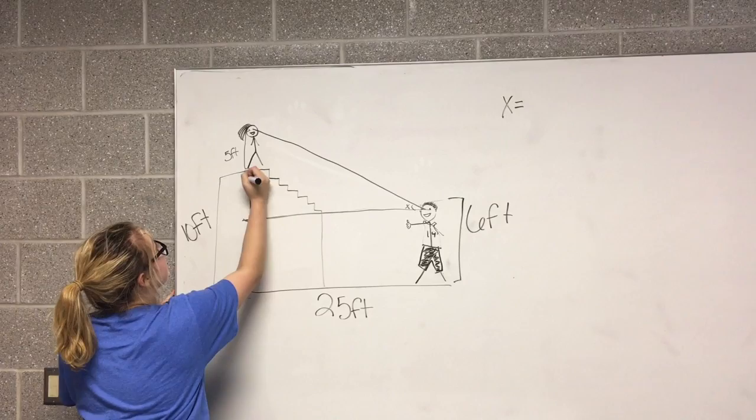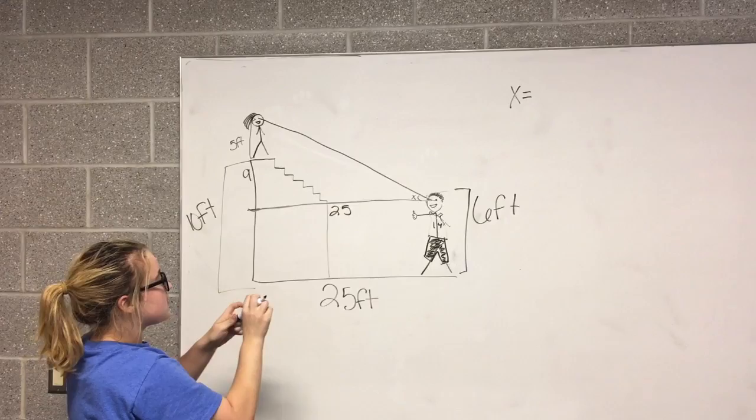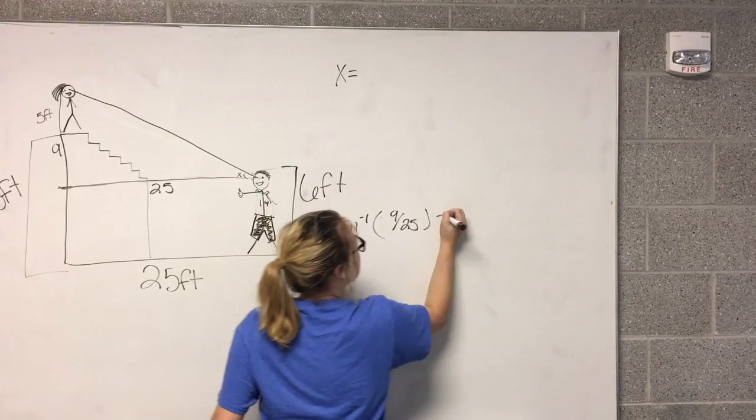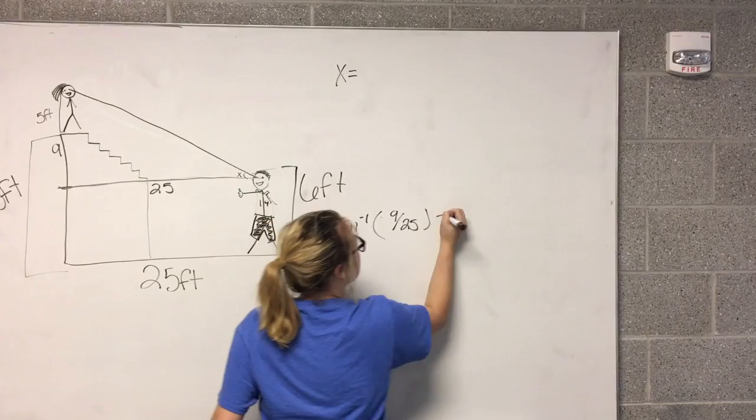You use inverse tangent to find the angle of Troy's eyes, which is going to be inverse tangent of 9 over 25, which gives you 19.8 degrees. So Troy has to look at an angle of 19.8 degrees to make eye contact with Gabriela.